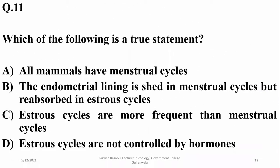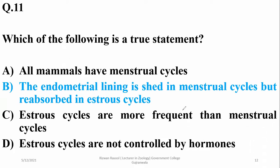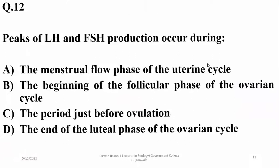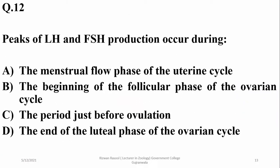Question number eleven: which of the following is a true statement? All mammals have a menstrual cycle is a wrong statement — other mammals have an estrous cycle. Endometrial lining is shed in the menstrual cycle but absorbed in the estrous cycle — yes, that seems the right statement. Menstrual cycle is more frequent than the estrous cycle of larger mammals, and saying cycles are not controlled by hormones is wrong. So beta is the right answer.